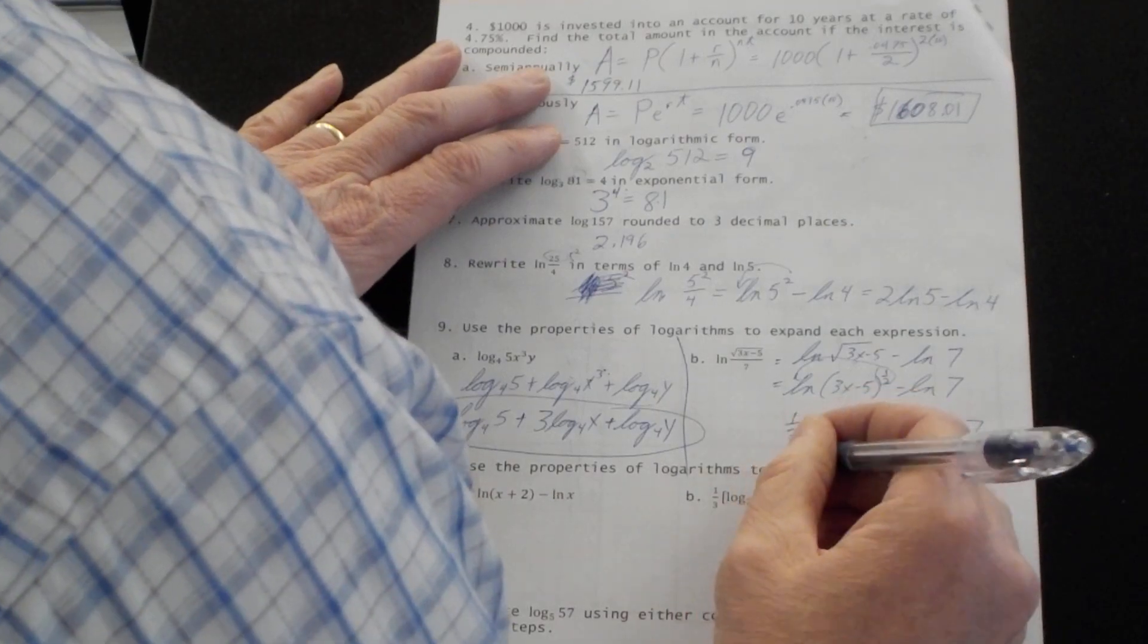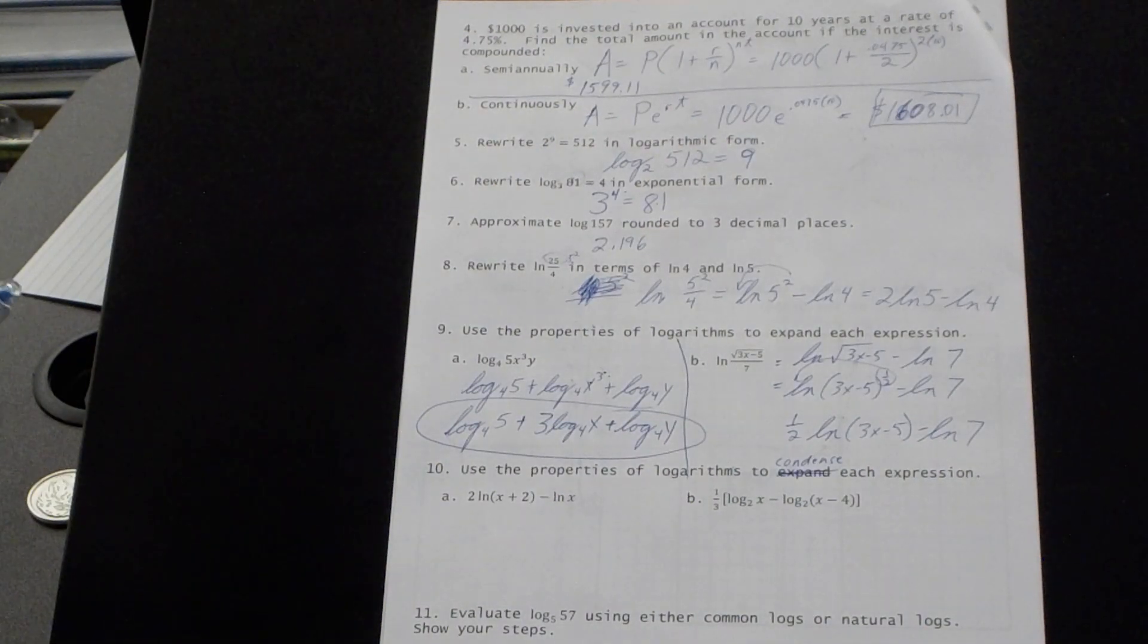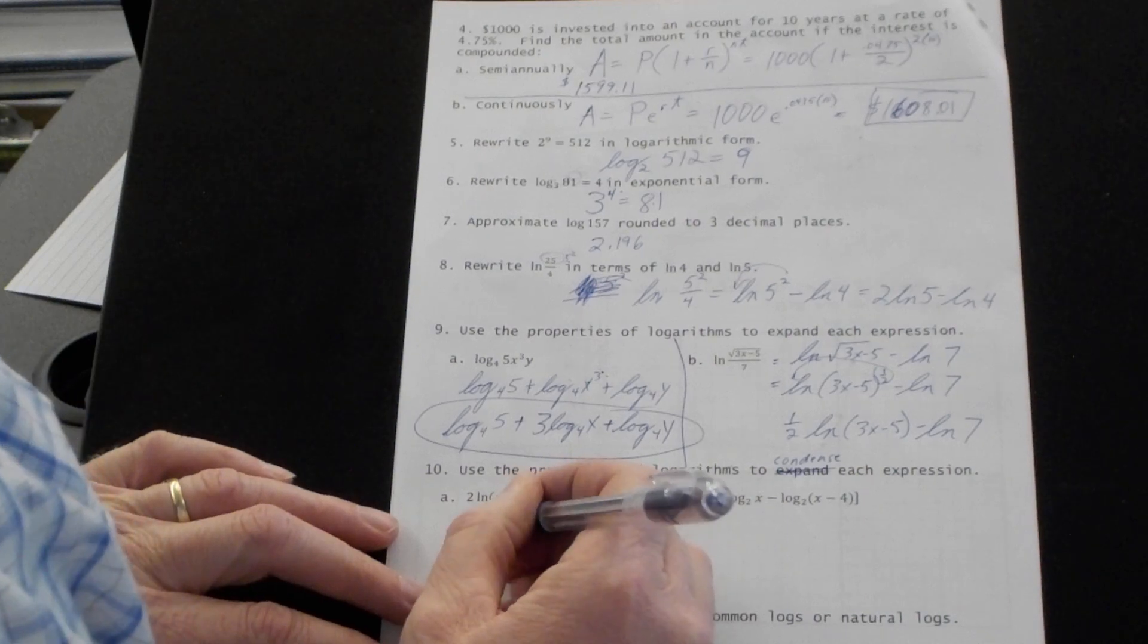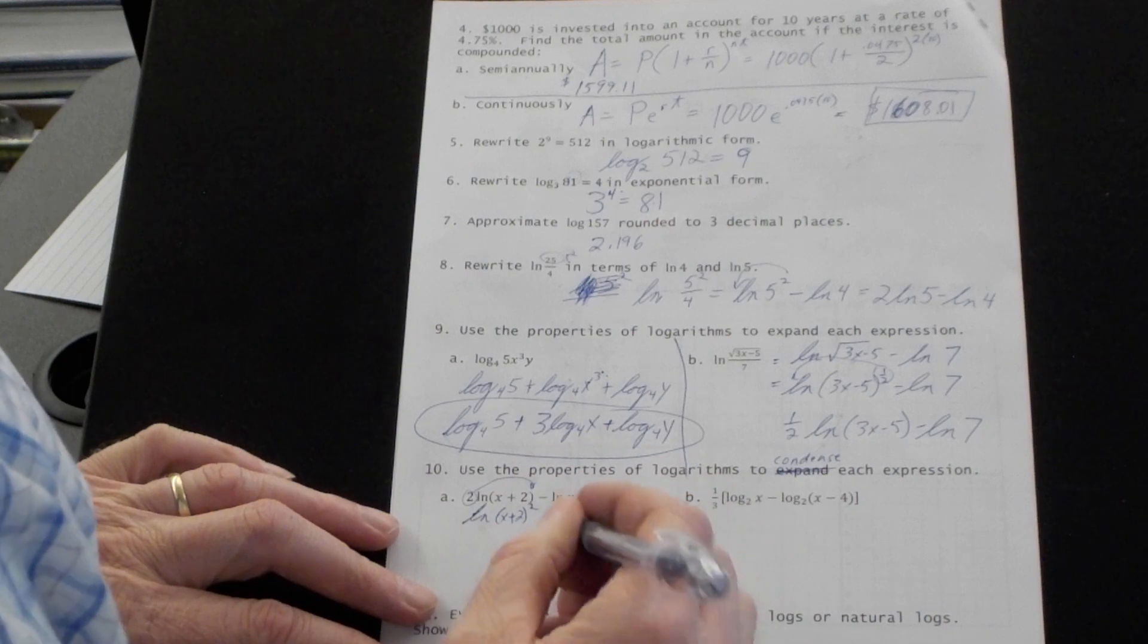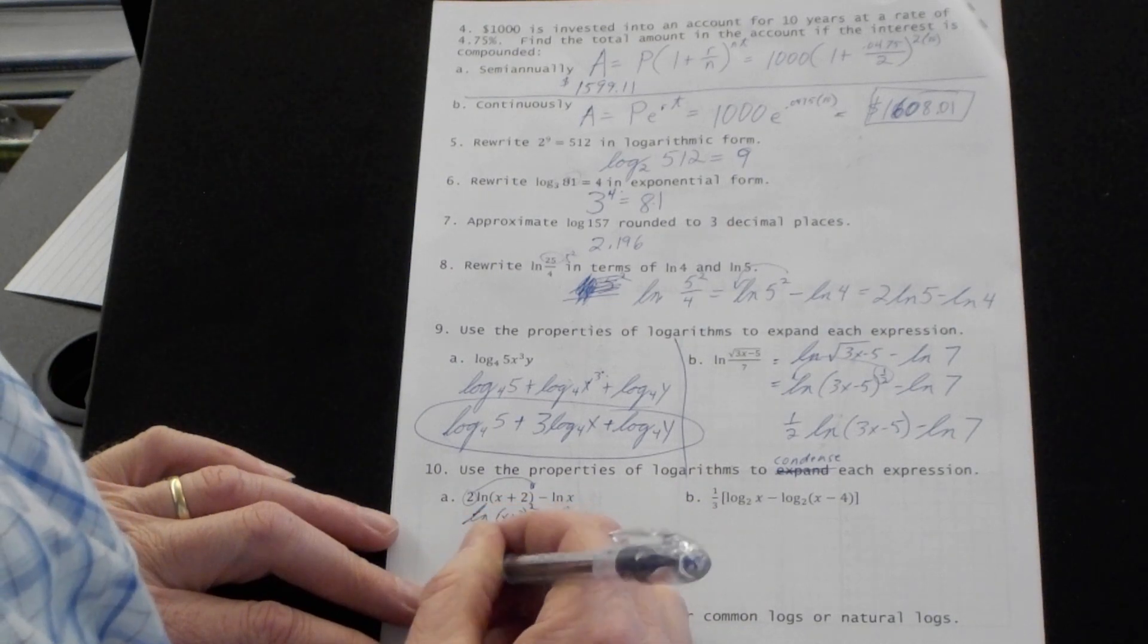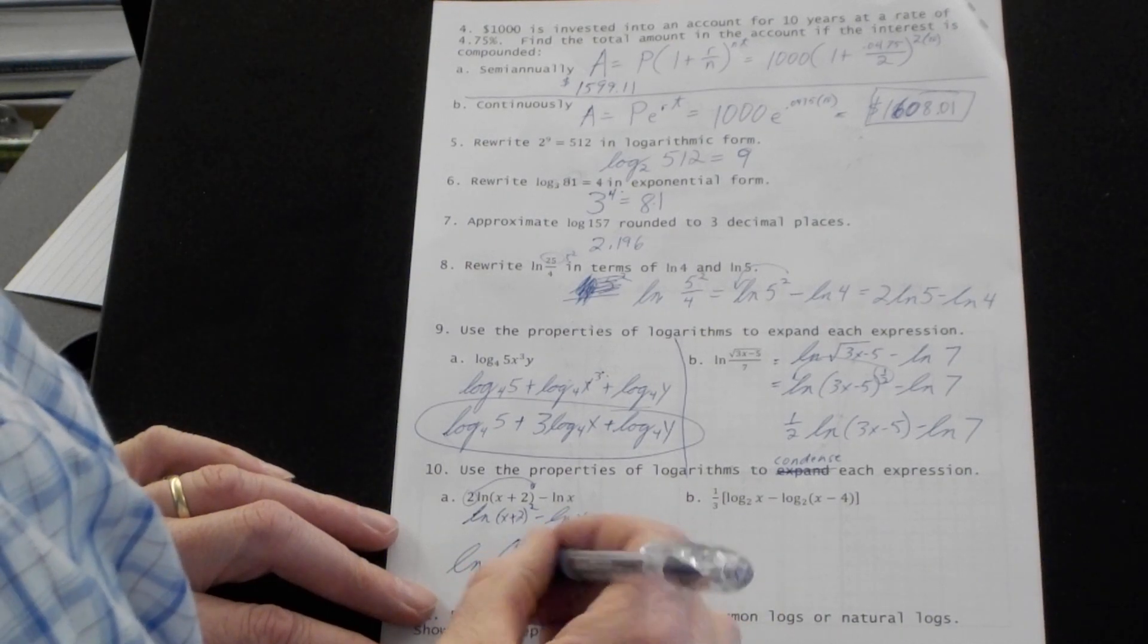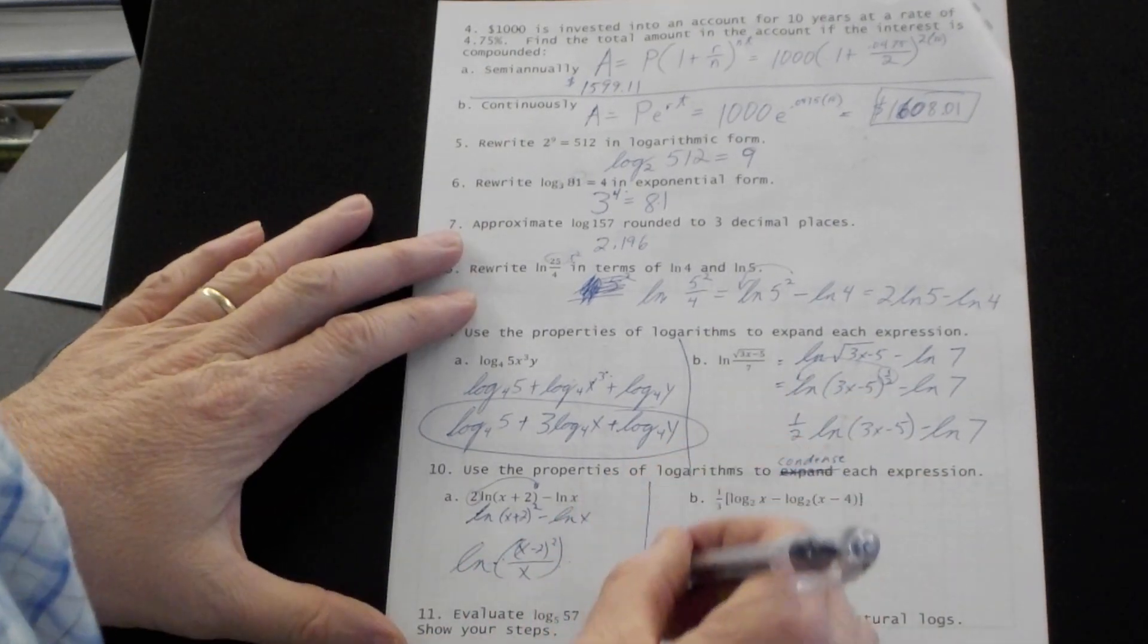This one, remember to condense. I have a feeling your test will have the same mistake on it. We'll find out. Condense. Want to make it smaller. I'm going to write this as the natural log of x plus 2 squared. Pull this and make it there. Minus the natural log of x. Minus, we'll switch to division with just one natural log. x plus 2 squared over x. These are probably not necessarily this set of parentheses, but I think you get the point.